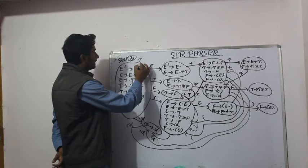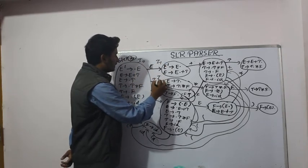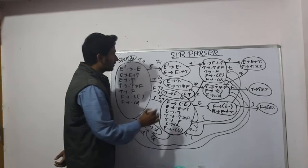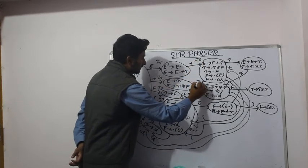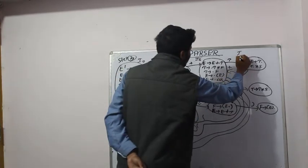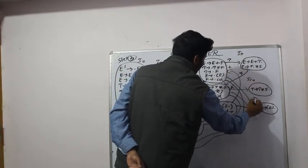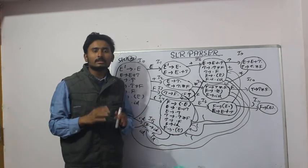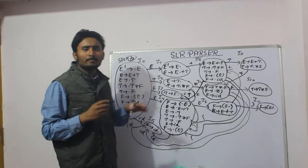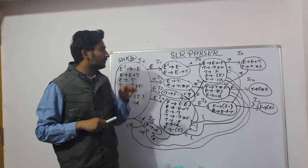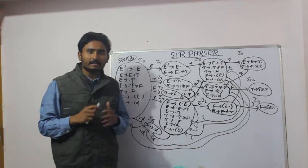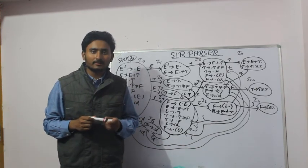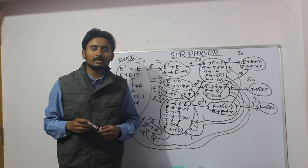Now you need to name each state. It is advisable to name them in order as you draw them: I0, I1, I2 ... up to I11, giving us 12 states in total. I will use this DFA design to construct the SLR parse table. The diagram seems complex, but after a few more classes you will have a clear idea of how to construct the SLR parse table. Stay tuned to Learn It by Fun — like, share, and subscribe. If you have any queries, comment in the comment section. Thank you.